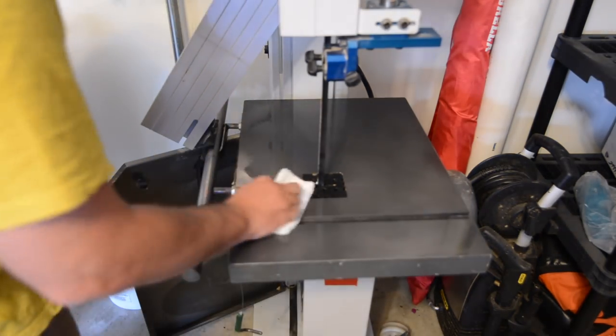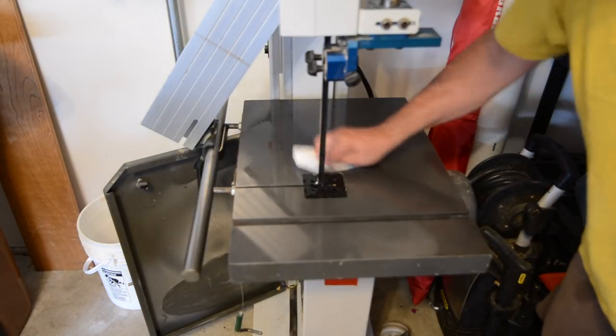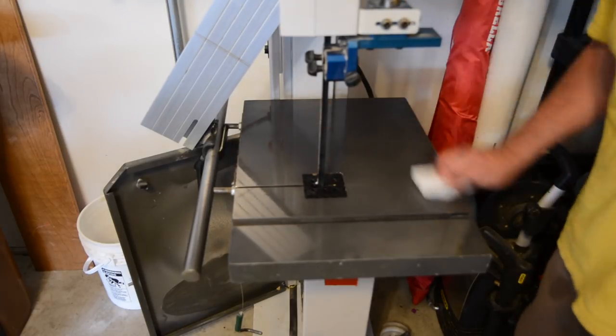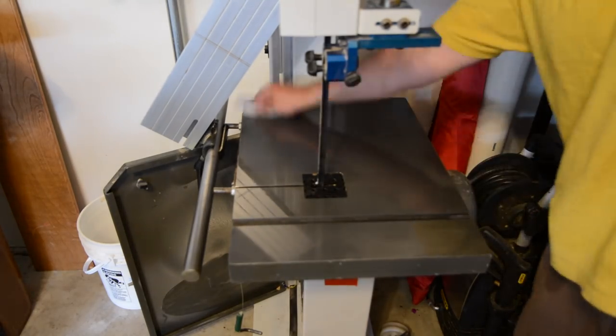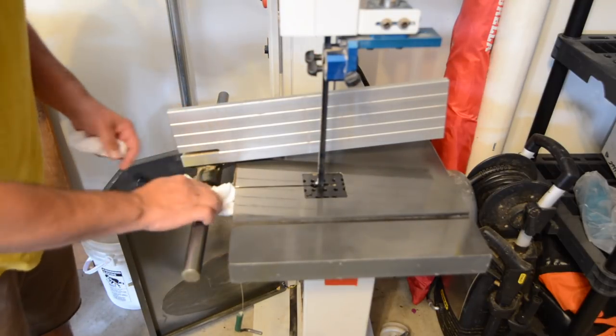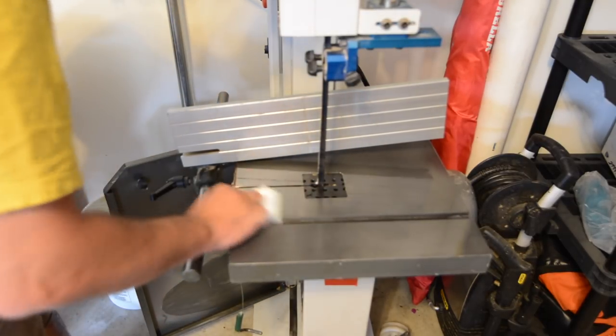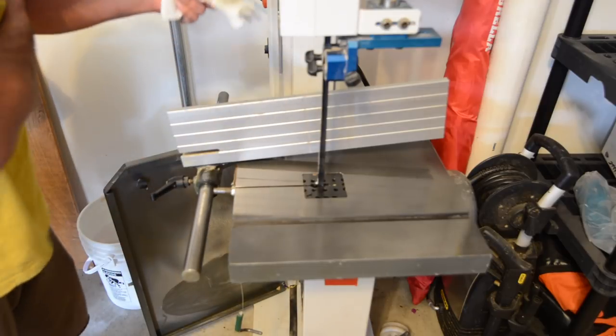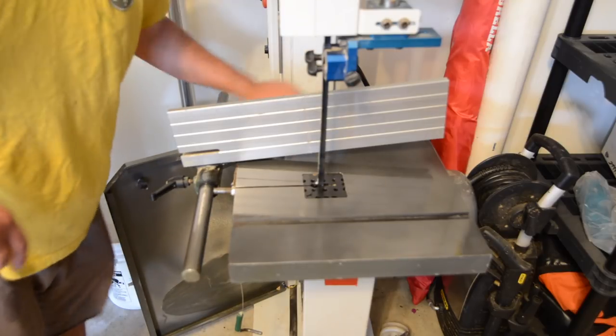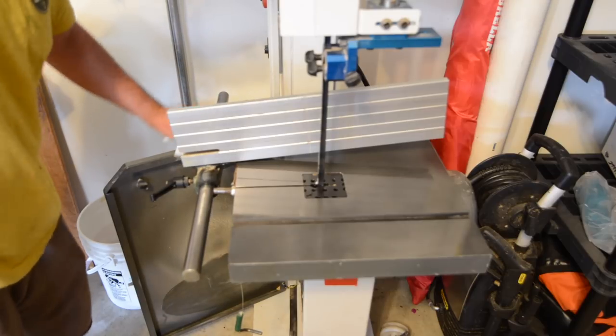I'll just rub this in. I'll also clean the bar as well so it slides a little bit smoother. And the way I rub this in is I just rub it in until there's sort of no residue left. I'll just let it sit and dry. In a couple hours the top will be all ready to use.